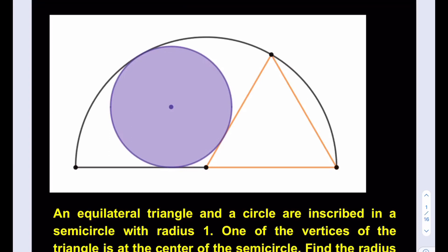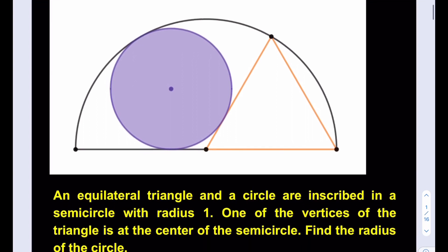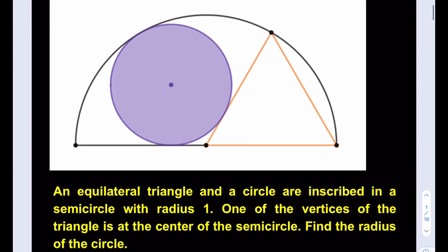Hello everyone, in this video we're going to be solving a geometry puzzle. An equilateral triangle and a circle are inscribed in a semicircle with radius 1. One of the vertices of the triangle is at the center of the semicircle, right here. Find the radius of the circle.